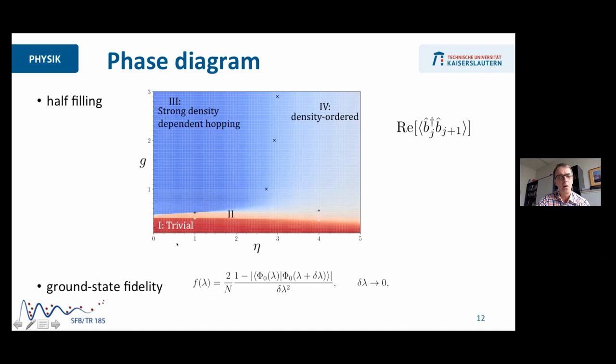So we fill our Rydberg systems half with excitations and look at the ground state diagram. What we find is depending on these two parameters, the second-order hopping and the density-density interaction, there are three phases which are characterized by different correlations. The first one is trivial. When the interactions are all small, we have basically just superfluid. The second phase is also relatively simple. When you crank up the density-density interaction, you'll just end up in a density-ordered state. You see here these little crosses, they are actually denoting the peaks of the ground state fidelity. The ground state fidelity tells you how much does a many-body ground state change if I slightly modify one parameter.